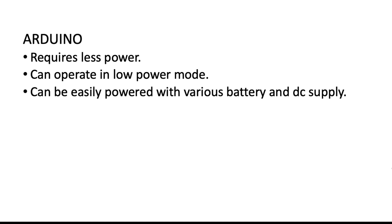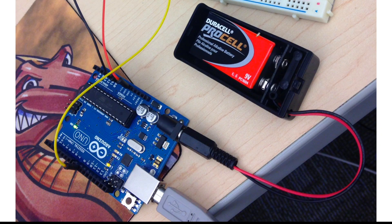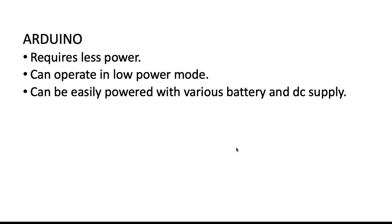An Arduino can be easily powered by a battery and various types of DC sources. As shown in this video, a 9V battery is directly connected to the DC jack.